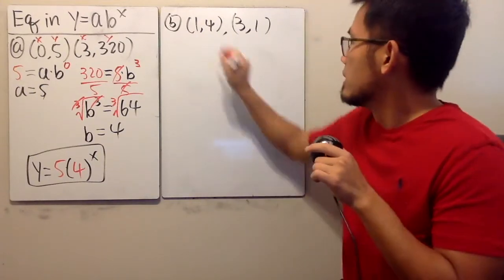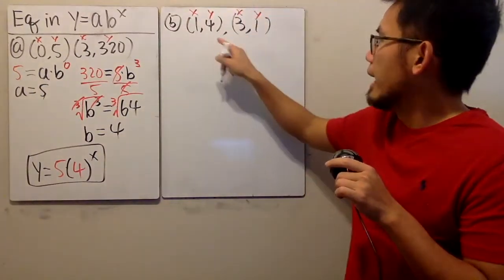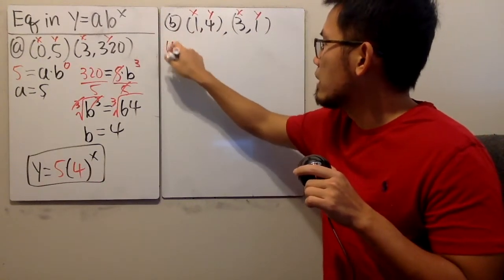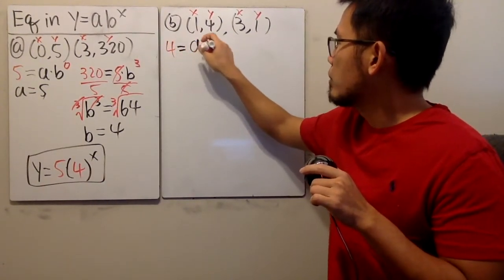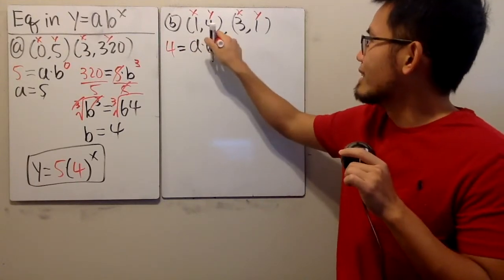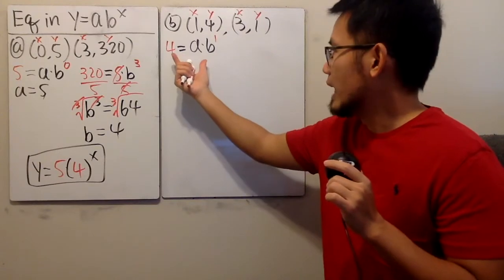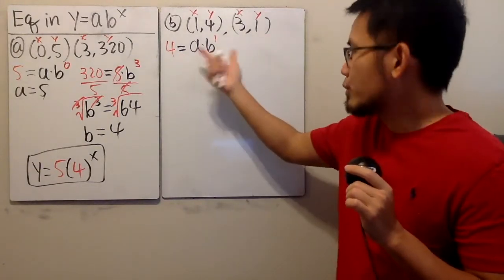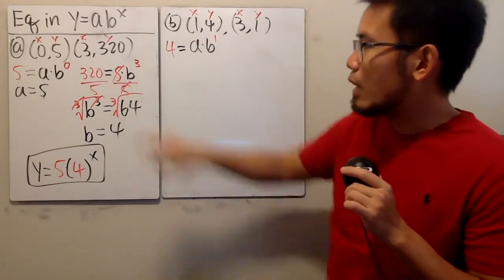Same thing. So x, y, x, y. We have y equals 4, so: 4 equals a times b to the first power, where x equals 1. We don't know a or b. Now the second point gives y equals 1, so: 1 equals a times b to the third power, where x equals 3. We don't know a or b because this is not as straightforward as the previous one.